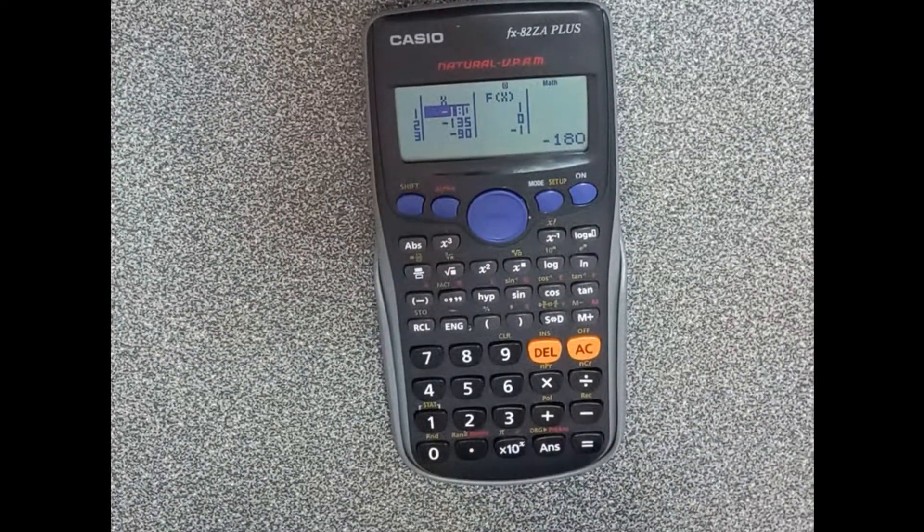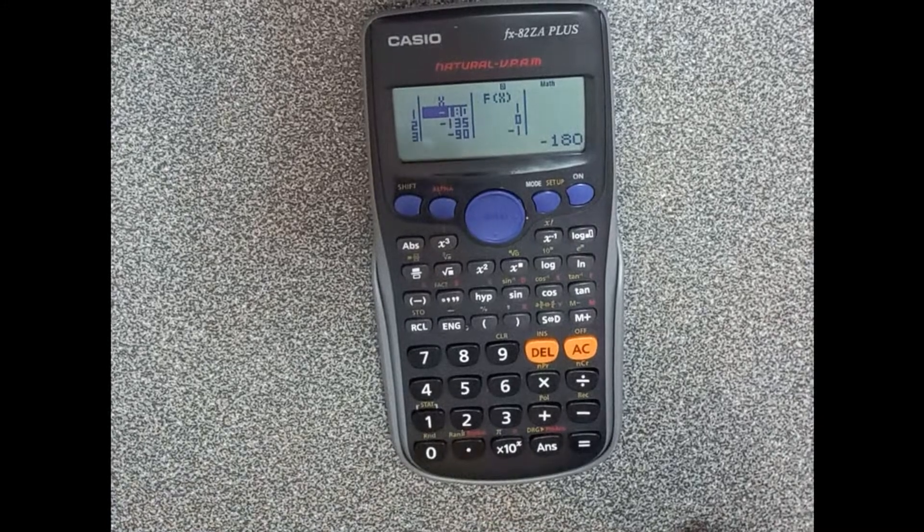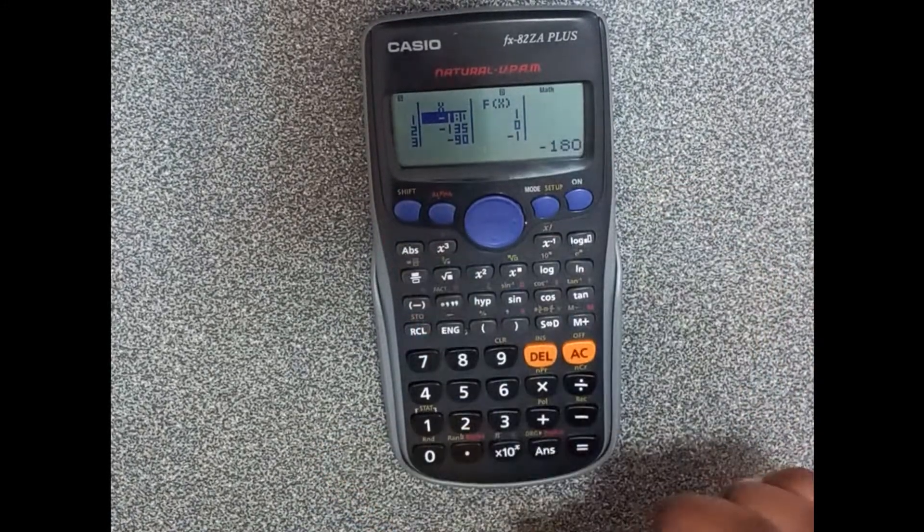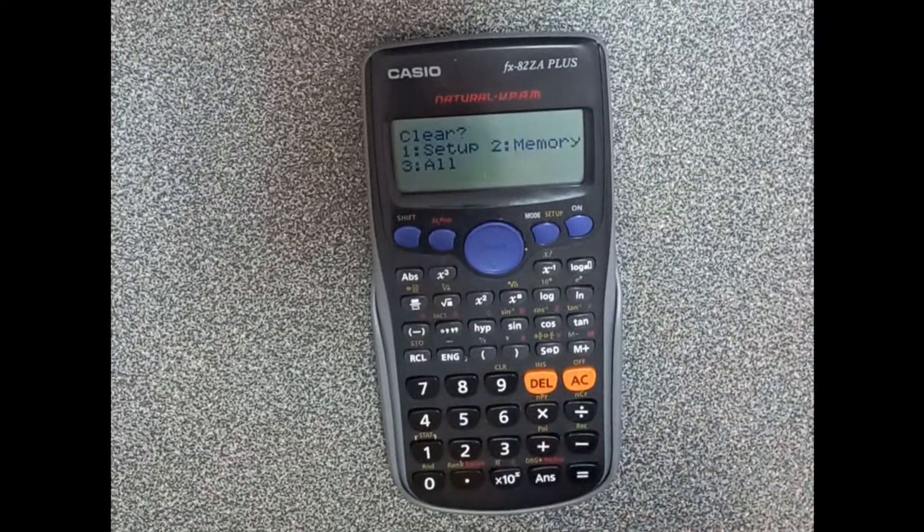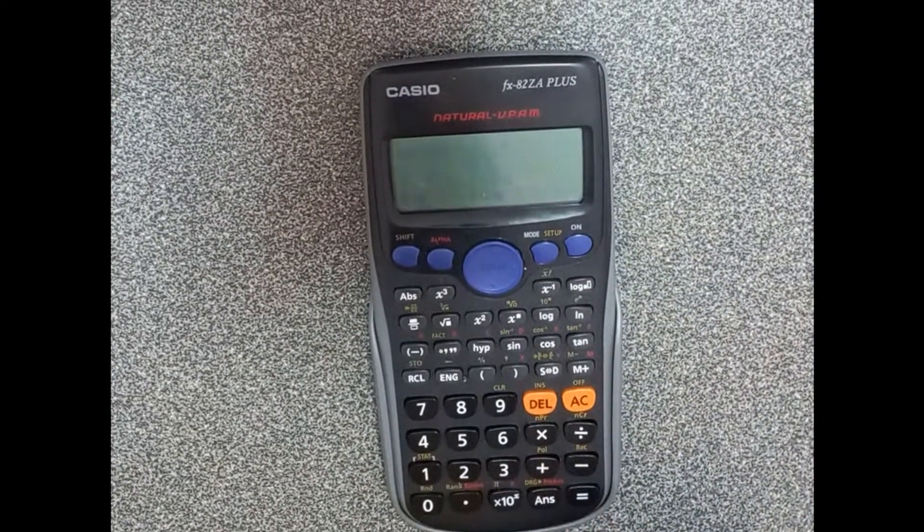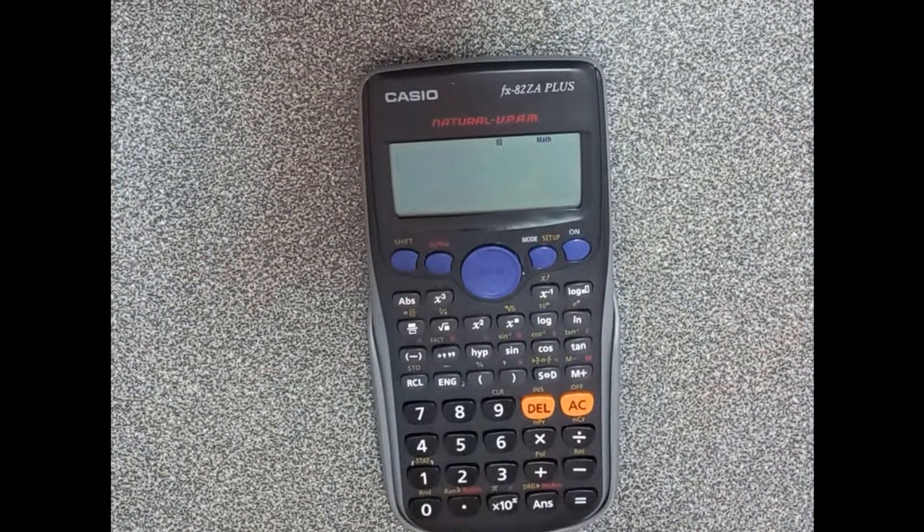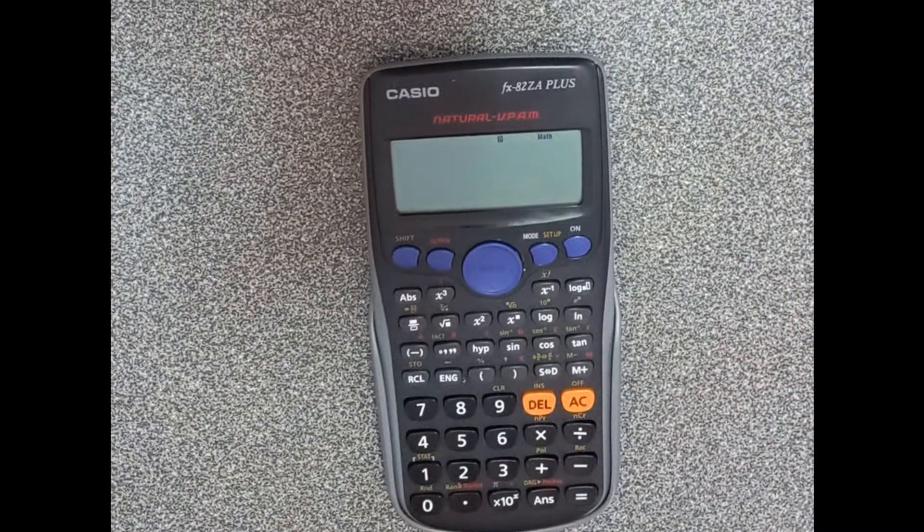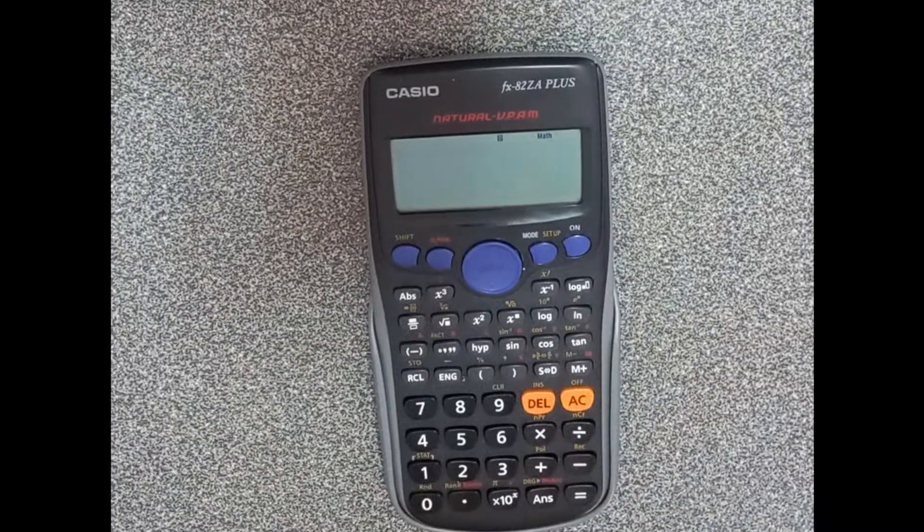When you are done drawing the graph and you're going to another section, you want to clear the calculator. You go shift 9, and then it's 3 clear all, then equals, then AC. Your calculator is clear, you can do any section. This is the end of our lesson. Please practice, thank you for watching.